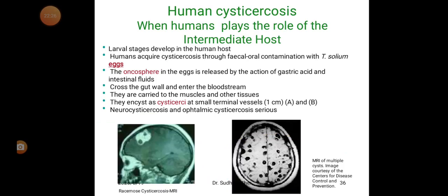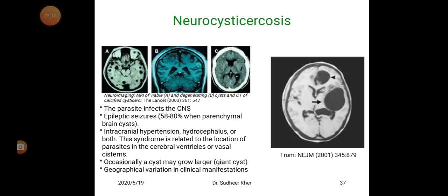When humans play the role of the intermediate host, the larval stage develops in the human host. Humans acquire cysticercosis through feco-oral contamination with Taenia solium eggs. Oncospheres in the eggs are released by the action of gastric acid and intestinal fluids, cross the gut wall, and enter the bloodstream. They are carried to muscles and other tissues, encysting as cysticercus at small terminal vessels, about 1 cm. Neurocysticercosis and ophthalmic cysticercosis are serious complications.